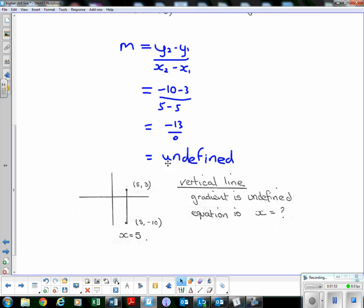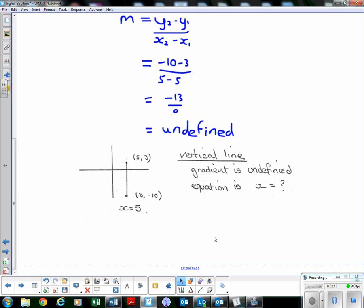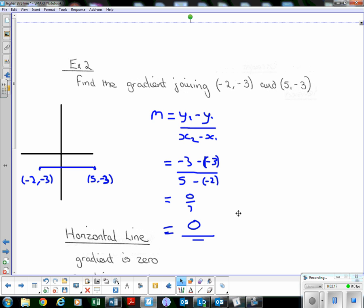And the equation of a line like that will just be x equals 5. The reason why it's x equals is that the x coordinate is all the same. So when we're talking about the equation of a straight line or any sort of coordinate grid, where we write x we mean the x coordinate. So on this line, the x coordinate is 5. That's the best way to describe that line. All right, so another question: find the gradient joining (-2, -3) and (5, -3).